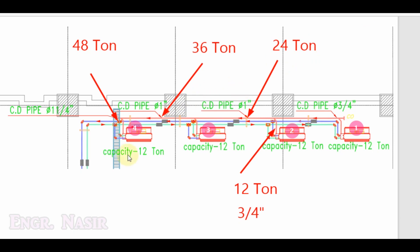Going to FCU4, which also has 12 ton capacity, its branch is 3/4 inch. After connecting all four FCUs, the total capacity is 48 tons. Looking at the table, 48 tons falls in the range from 40 to 90 tons, and the corresponding diameter is 1 and 1/4 inch. In this way, simply add the capacity of all units connected before a given point and look up the corresponding pipe diameter from the table.